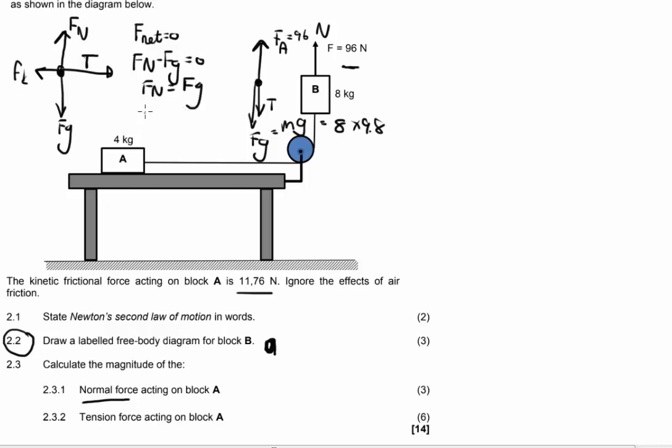If I now take Fg as mass times 9.8, 4 times 9.8 here is going to give me my answer, which is going to be 39.20 Newton. Now this has to be upwards, all forces are vectors, remember that.